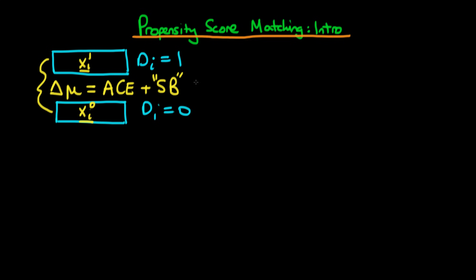We've spoken about how it might in principle be possible to stratify our samples such that both samples had similar levels of these covariates — these xi here. But there are problems in doing that. The main problem is that if xi, this list of other important covariates, is highly dimensional — in other words if it reflects a number of different factors — then it becomes increasingly difficult to find matches between the treatment and the untreated group.